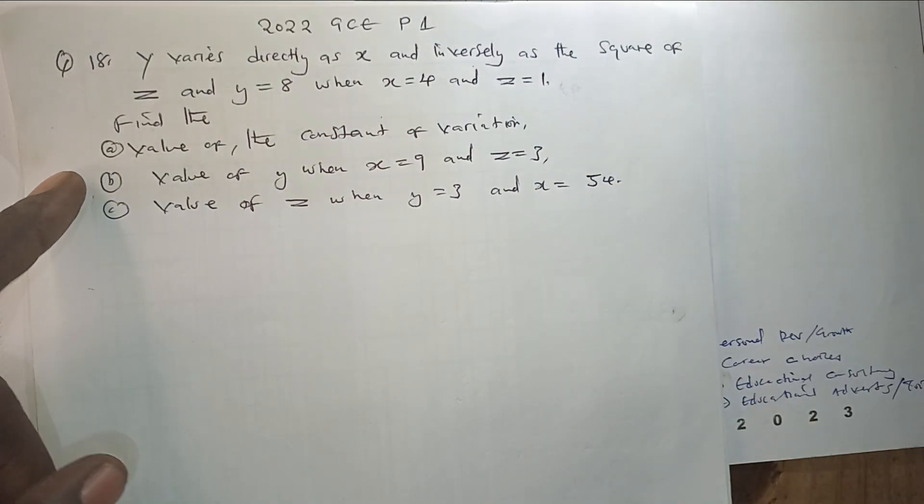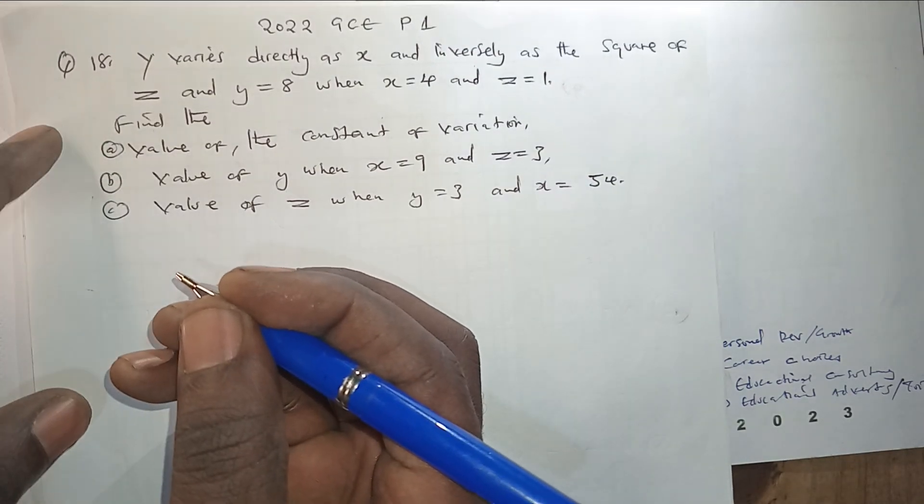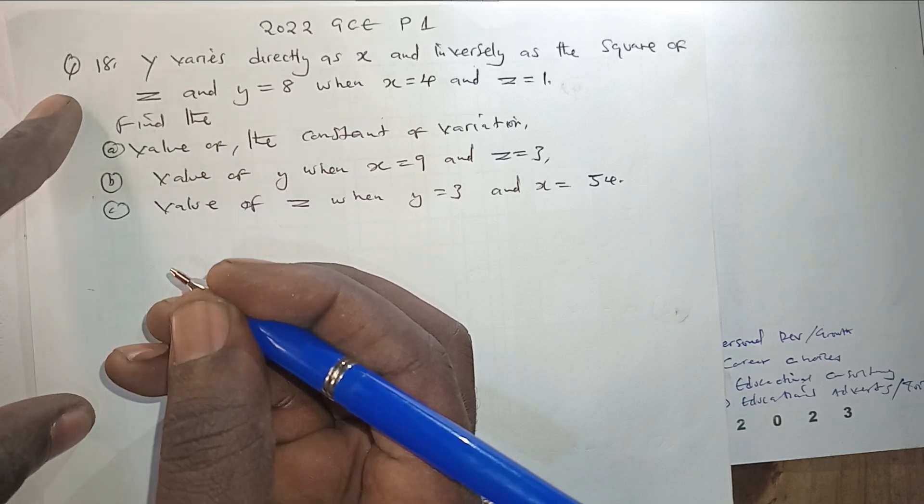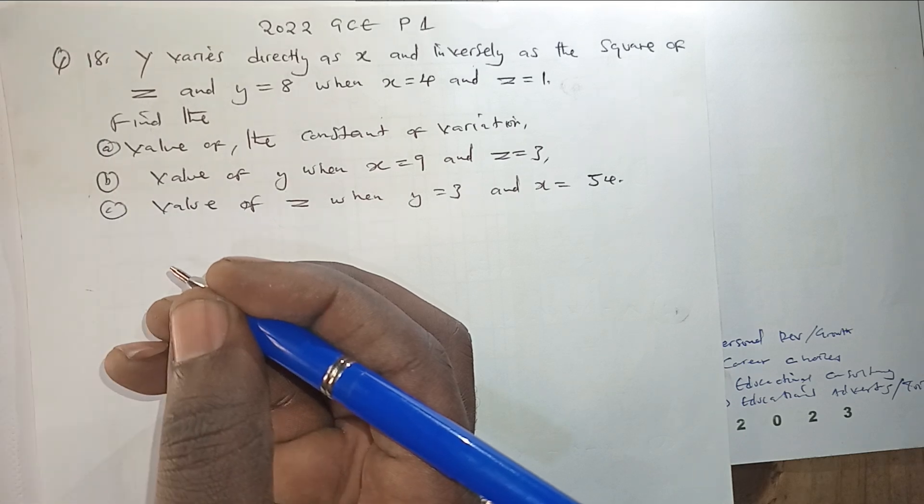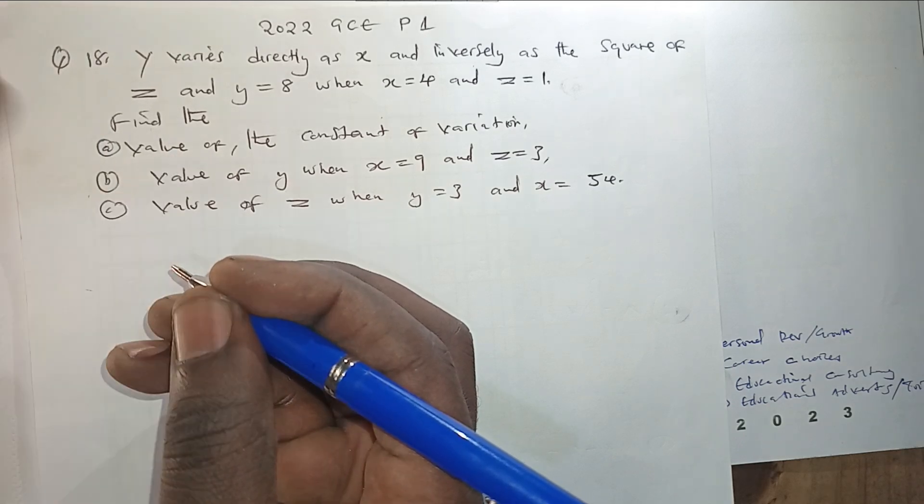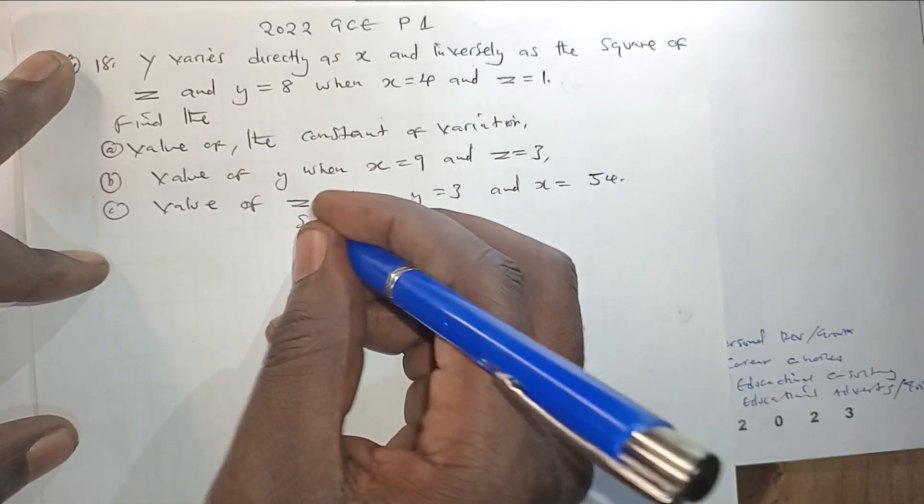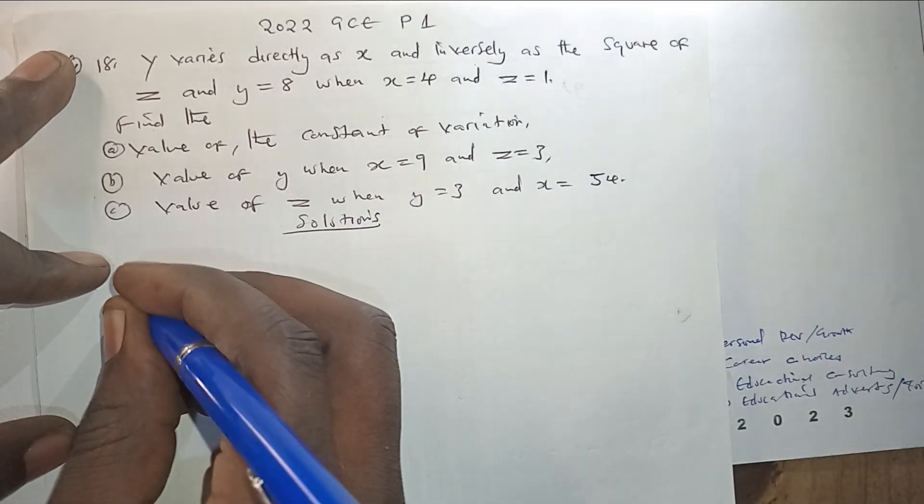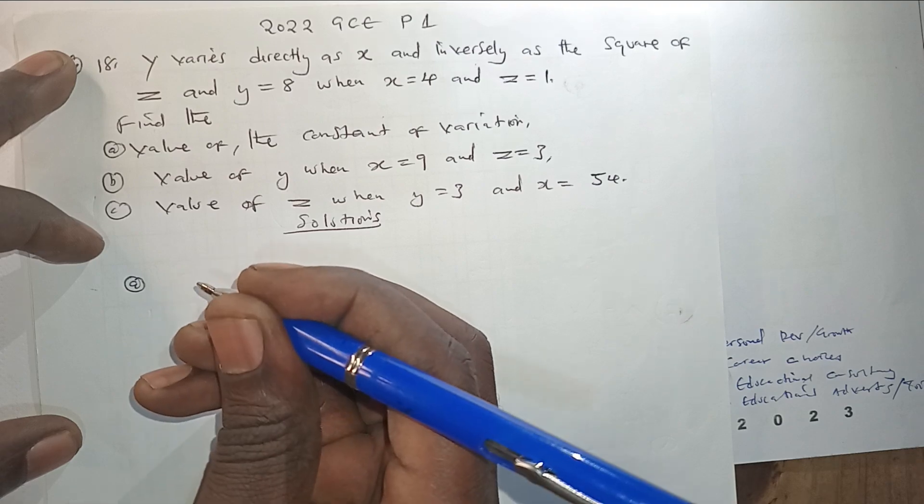So how do we interpret this information? In this question we have got two parts. There is the direct variation as well as the indirect variation. How do we come up with an equation which is going to indicate the two variations that we have here? For our solutions, here is what we are supposed to do. For part A, the first thing that we need to come up with is an equation.